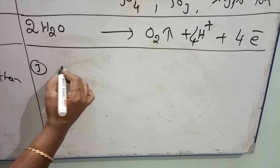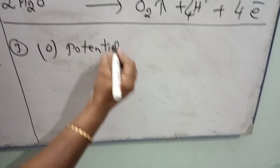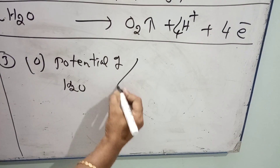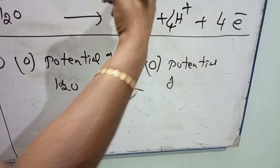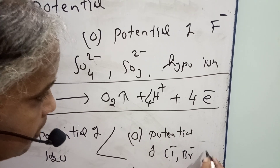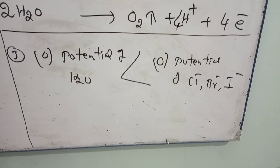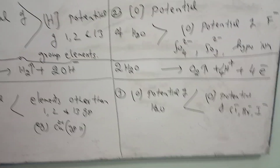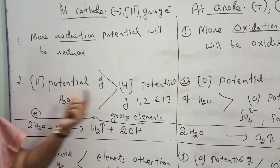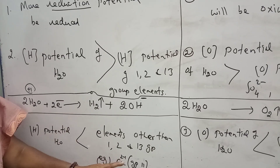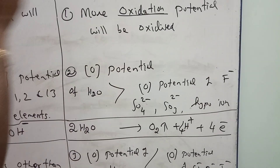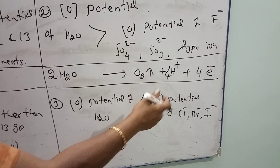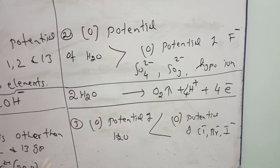The last condition: the oxidation potential of water is less than the oxidation potential of the halogens — specifically chloride (Cl⁻), bromide (Br⁻), and iodide (I⁻). So the criteria to follow: when water competes with first, second, or thirteenth group elements at cathode, water will be reduced. When water competes with other groups, the other group element will be reduced at cathode. At the anode, when water competes with sulfate or hypo-ions, water is oxidized and gives oxygen. When water competes with chloride, Br⁻, or I⁻, these halide ions are oxidized and give corresponding halogen products.